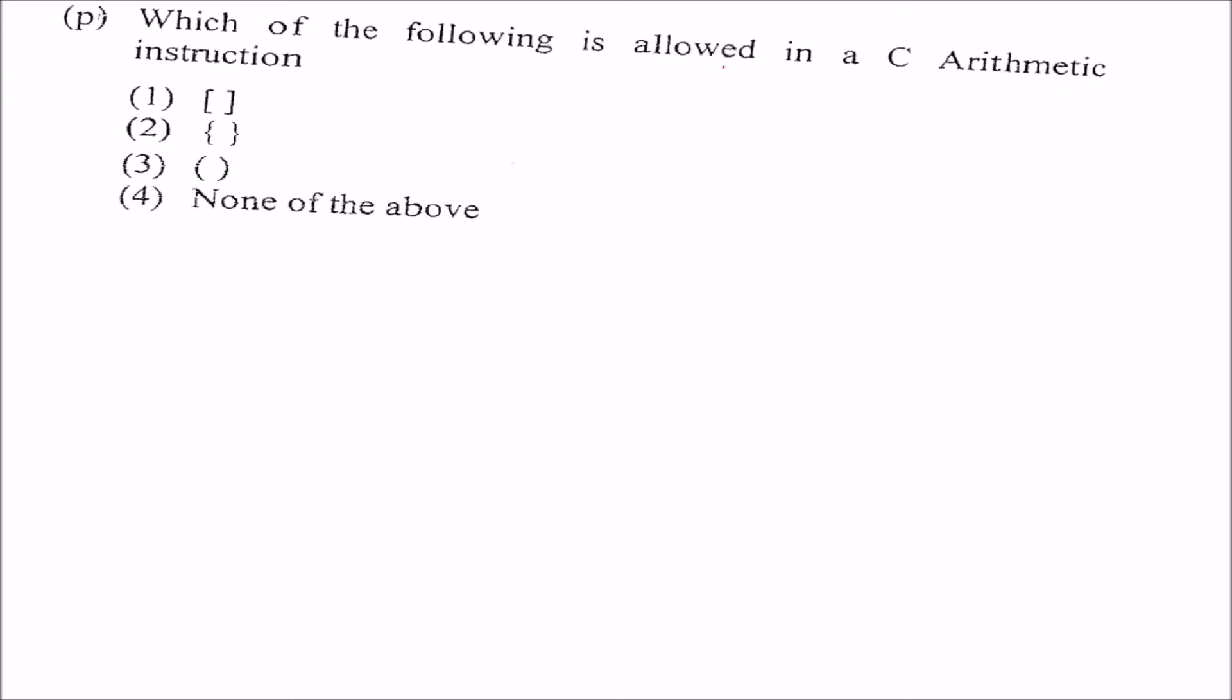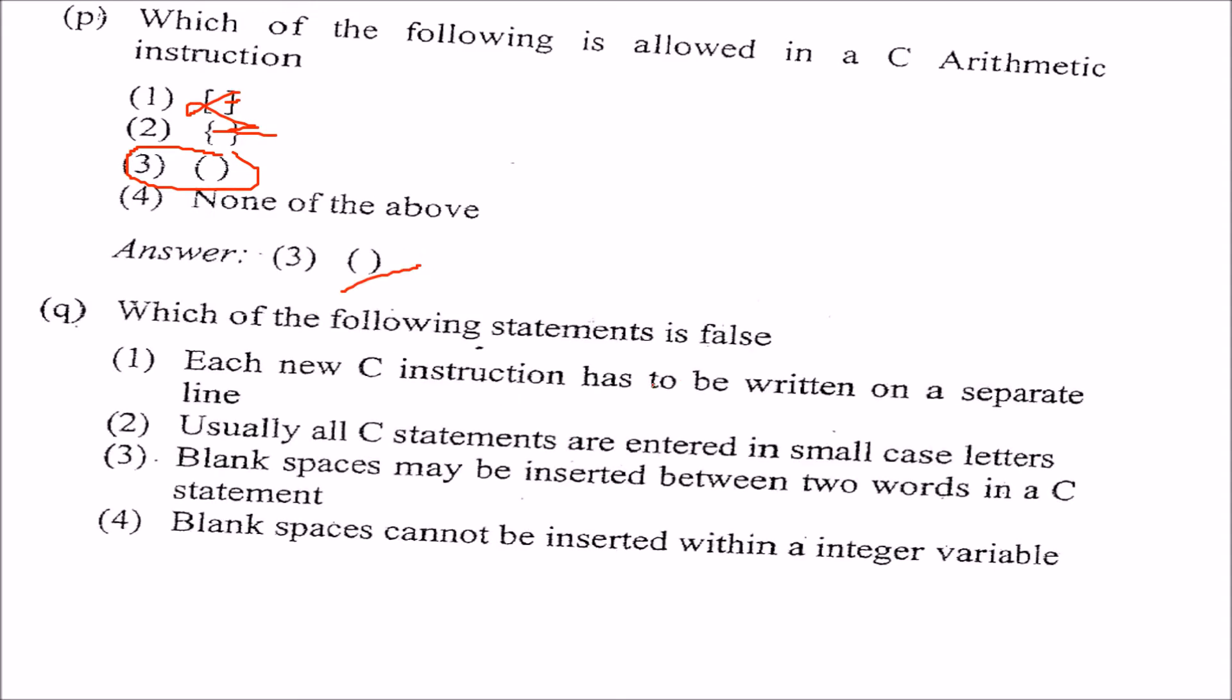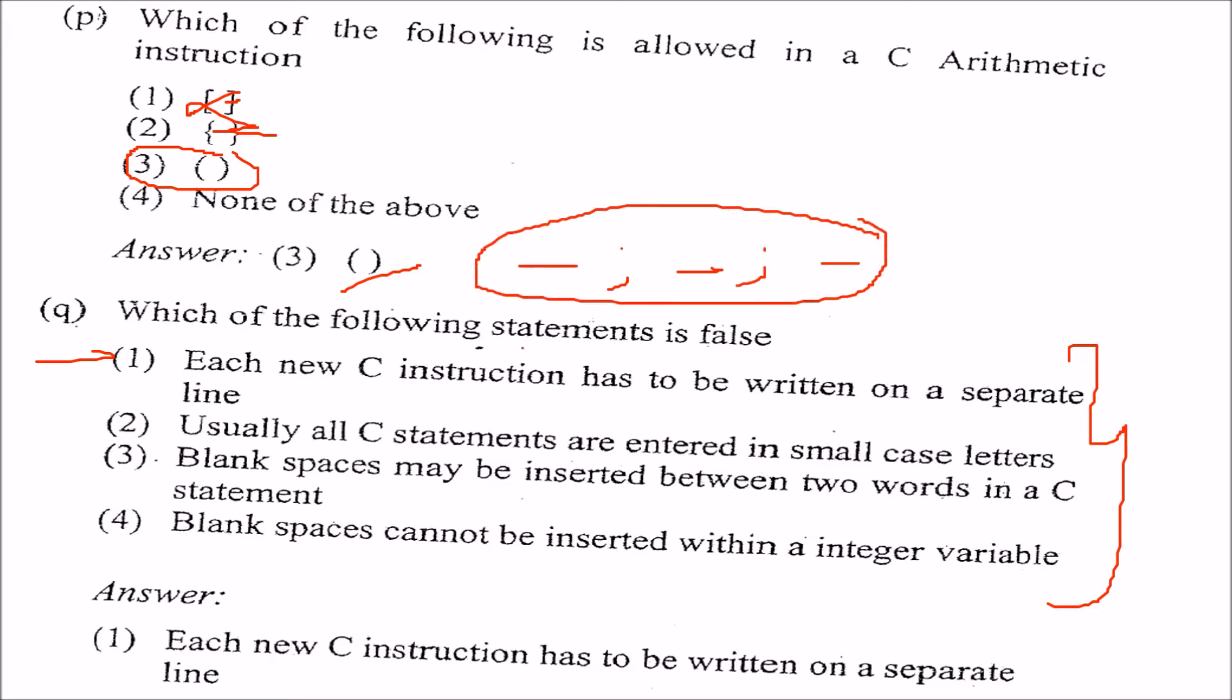Which of the following is allowed? In a C arithmetic instruction. Which of the following is allowed? Only this is allowed. Neither this nor this. Only third one. Which of the following statement is false? Please read them very carefully and try to answer. Which is false? The answer is actually 1. Each new C instruction has to be written on a separate line. There is no restriction like this. You can write your complete program in one line. Just separate them by a semicolon. So, there is no restriction of writing them on different lines. This we just do, just to make our program readable.